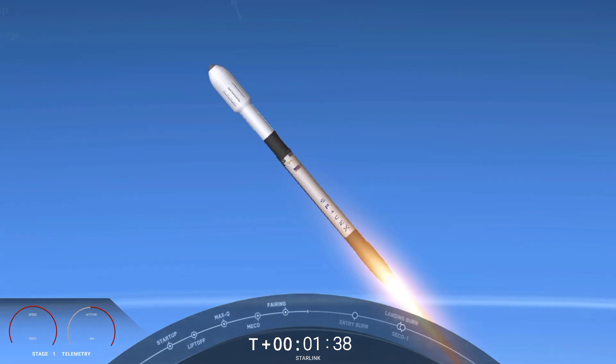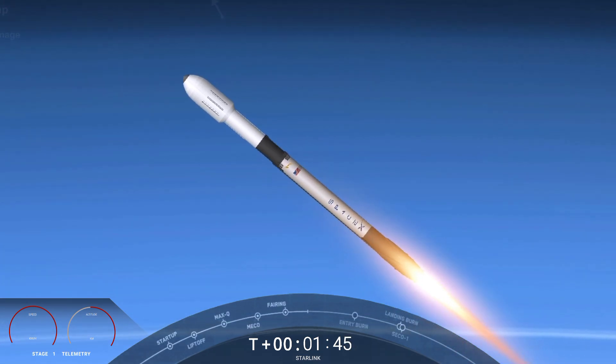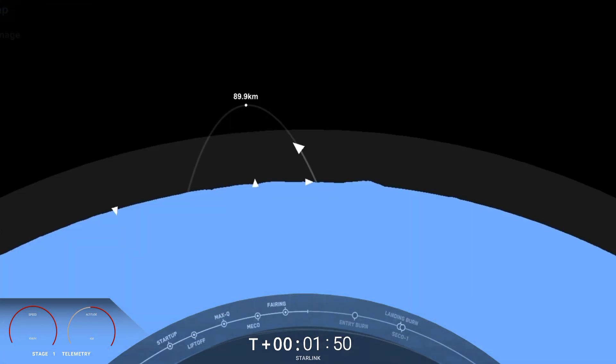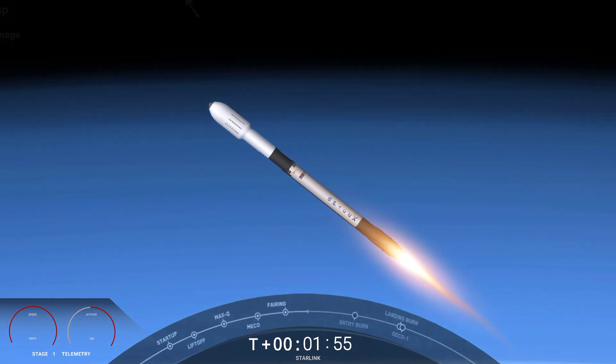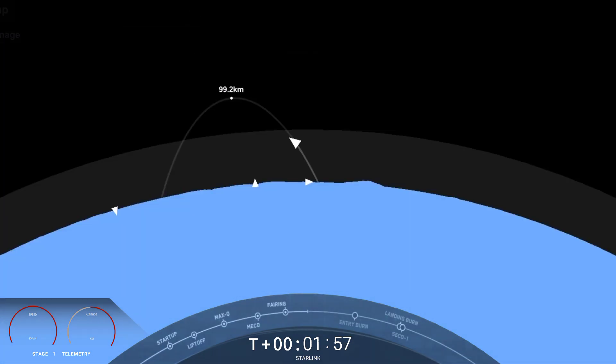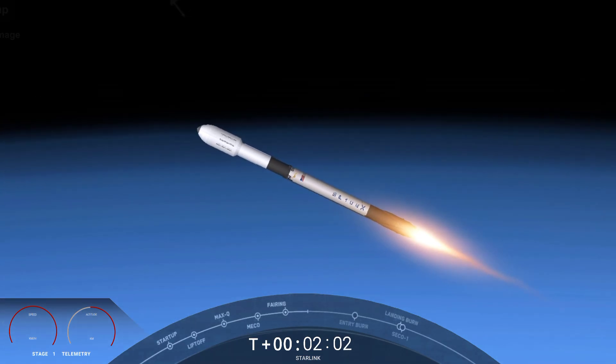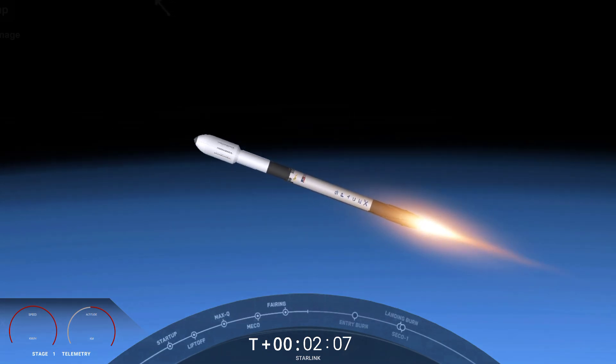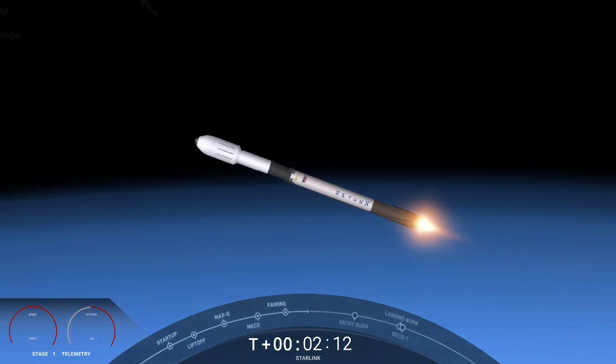First up, main engine cutoff. This is where all nine engines on the first stage will shut down in order to slow the vehicle down in preparation for stage separation. During stage separation, the first and second stages will separate from one another. The first stage will make its way back to our targeted landing zone, the drone ship Of Course I Still Love You, currently waiting in the Pacific Ocean. The second stage will continue its journey with second engine start one, where the single Merlin vacuum engine on the second stage will ignite and propel the second stage along with the Starlink satellites into orbit.